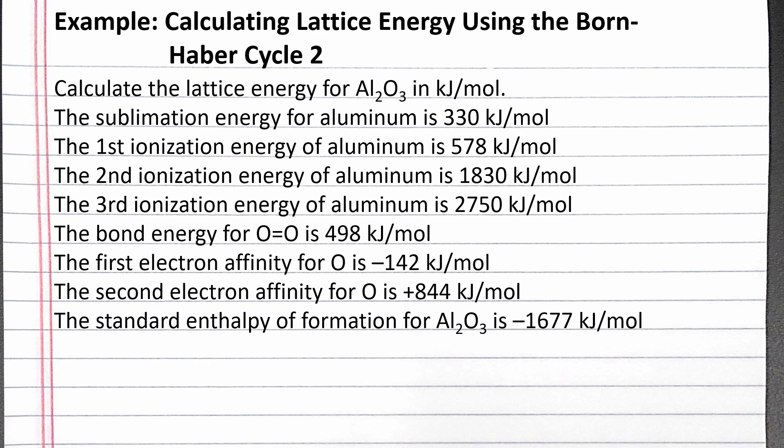In this example, we calculate the lattice energy of aluminum oxide using the Born-Haber cycle. Our problem reads: calculate the lattice energy for aluminum oxide in kilojoules per mole.